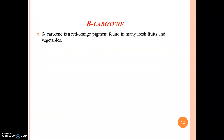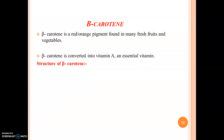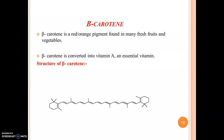The next pigment is beta carotene. Beta carotene is a red-orange pigment found in many fresh fruits and vegetables. It is converted into vitamin A, an essential vitamin. This is the structure of beta carotene — it contains 11 conjugated double bonds.